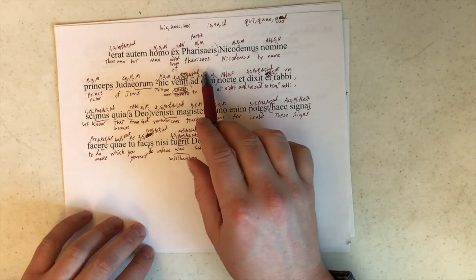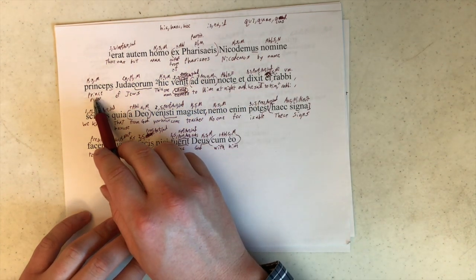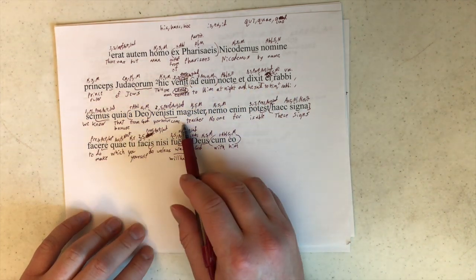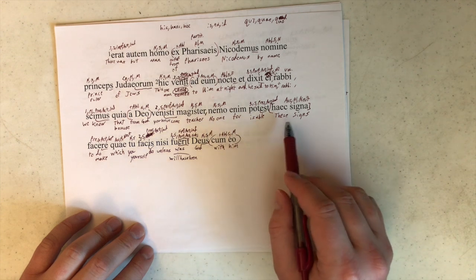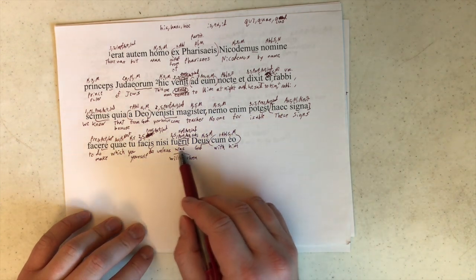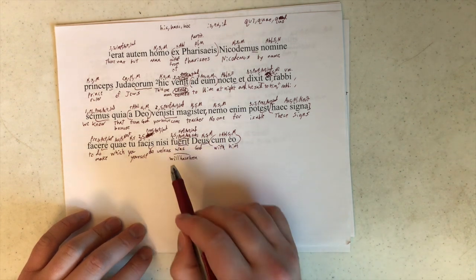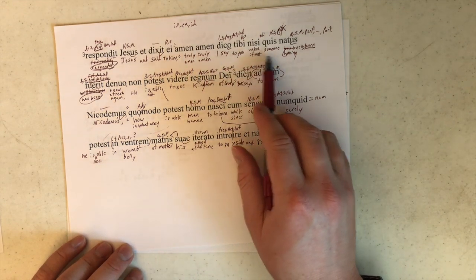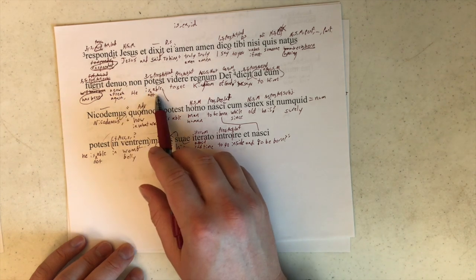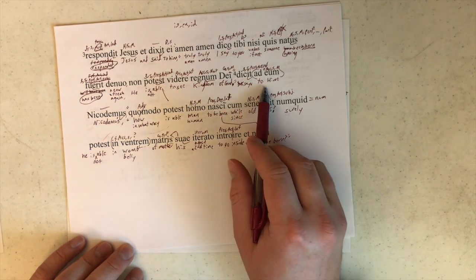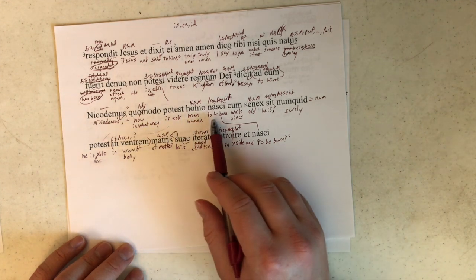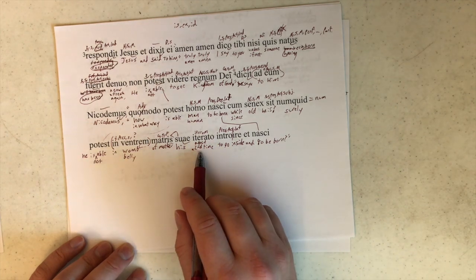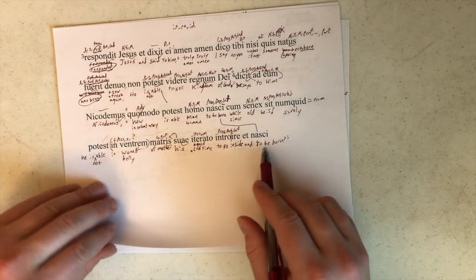But there was man of Pharisees, Nicodemus by name, ruler or prince of Jews. This man came to him at night, and he said to him, Rabbi, we know that you have come from God a teacher, for no one is able to do these signs which you yourself do unless God is with him. Remember, this is one of the errors that we had. Jesus responded and said to him, Amen, Amen, I say to you, unless someone has been born anew, he is not able to see kingdom of God. Nicodemus says to him, In what way is man able to be born since he is old? Surely he is not able to go inside a second time again into his mother's womb and to be born.